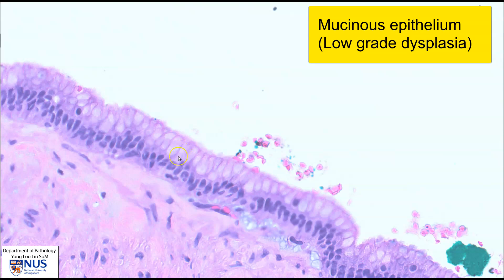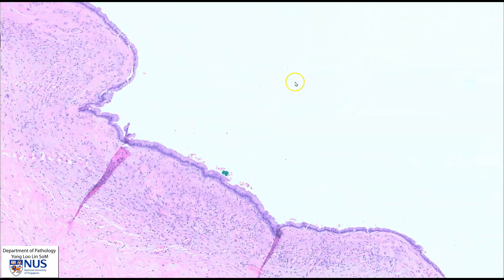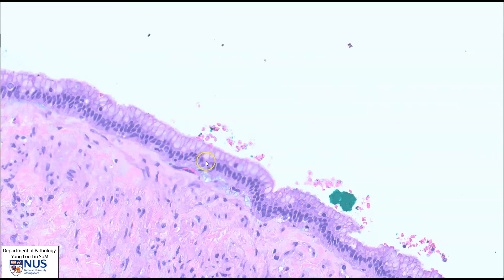The columnar cells have abundant cytoplasm with pale pinkish to sometimes bluish or grayish mucin within the cytoplasm. In many instances these cells produce mucin, so usually in the intact specimen there is abundant mucin filling up the locules, but this drops out during the cutting up of the specimen. So this area shows mucinous epithelium which is low-grade because the nuclei are small, uniform, and polarized to the basal aspect of the cell.